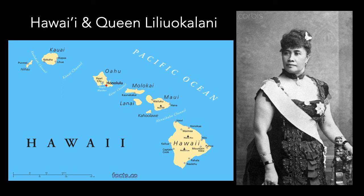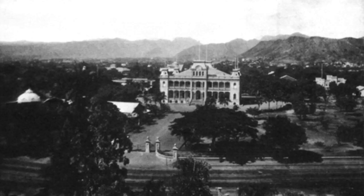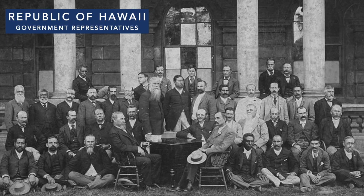The last sovereign monarch of Hawaii was Queen Liliuokalani. She was overthrown, losing her power in the year 1893, though she was allowed to continue residing in the palace. There still exists today a royal family of Hawaii, but they were stripped of their power when this revolution occurred.